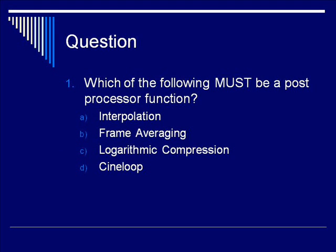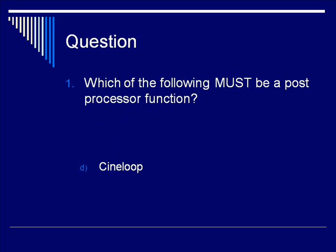Let's pause for another question. Which of the following must be a post-processor function? Interpolation? Frame averaging? Logarithmic compression? Or CineLoop? The answer is CineLoop. Remember that the CineLoop is part of the freeze frame technology, and it displays all of the frames that have recently been put into memory. To do that, you need to have those frames already assembled, so it's a post-processing technique.